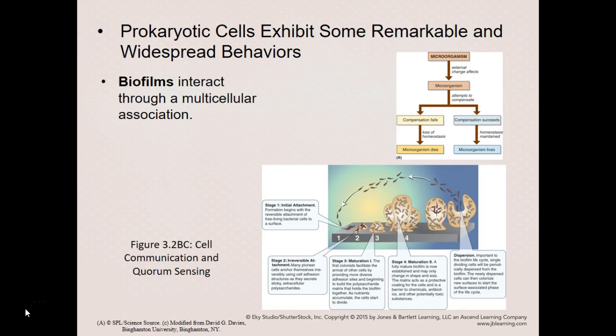Prokaryotes are always single-celled but they can produce multicellular arrangements or communities. One of those communities is called a biofilm. A biofilm is formed when microorganisms attach to a surface and start secreting chemicals. That initial attachment is reversible, so they can attach and come unattached. But once they start secreting certain polymers and polysaccharides, other microbes will attach and it becomes an irreversible attachment.